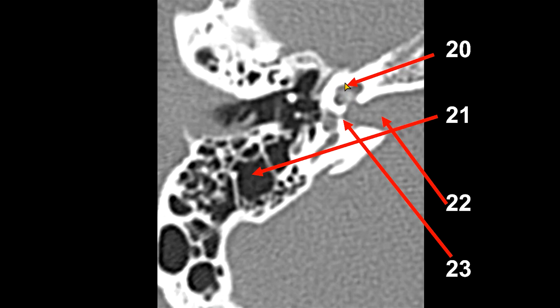Number 20 here is a portion of the cochlea — we're cutting through the apical turn of the cochlea, and this is the middle turn. On a previous slice we saw the basal turn, giving us all three turns: basal, middle, and apical. This area nicely demonstrates the cochlear aperture — the opening leading from the internal auditory canal to the cochlea. The small amorphous hyperdensity within the cochlea is part of the modiolus, effectively the skeleton of the cochlea. Number 21 points to the mastoid antrum and some mastoid air cells.